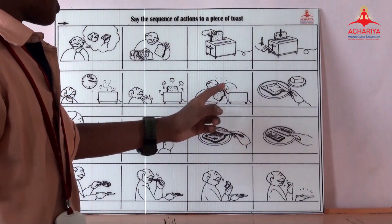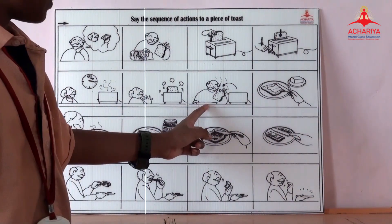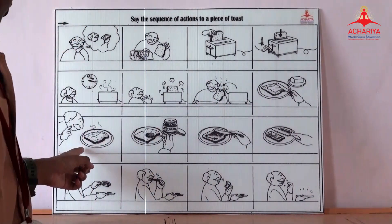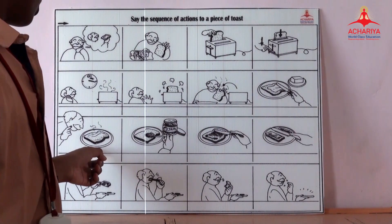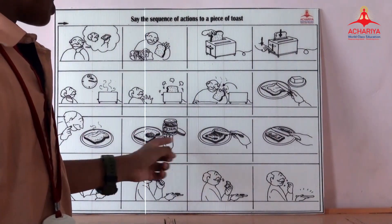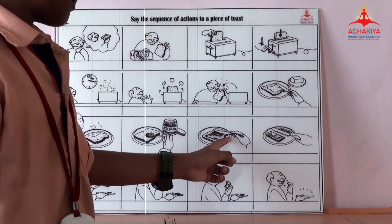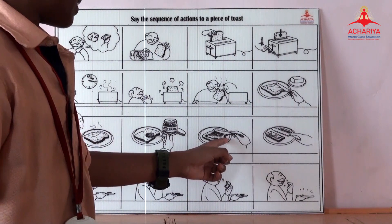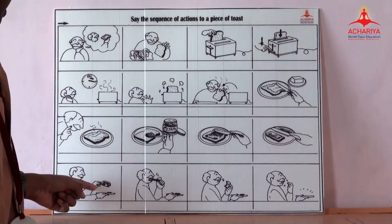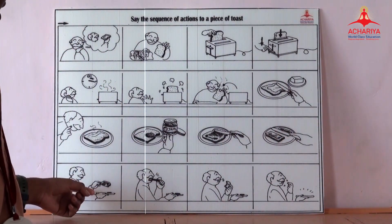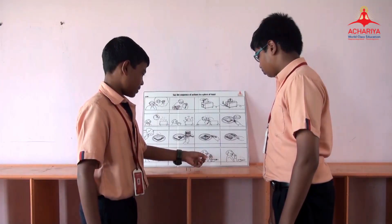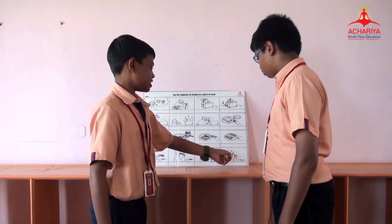He takes the bread and keeps it on the plate. He spreads the butter and waits for the butter to melt. He puts the jam and spreads the jam across the bread. He cuts the bread into two. He eats the first piece and swallows it. He takes the second piece and eats it fully.